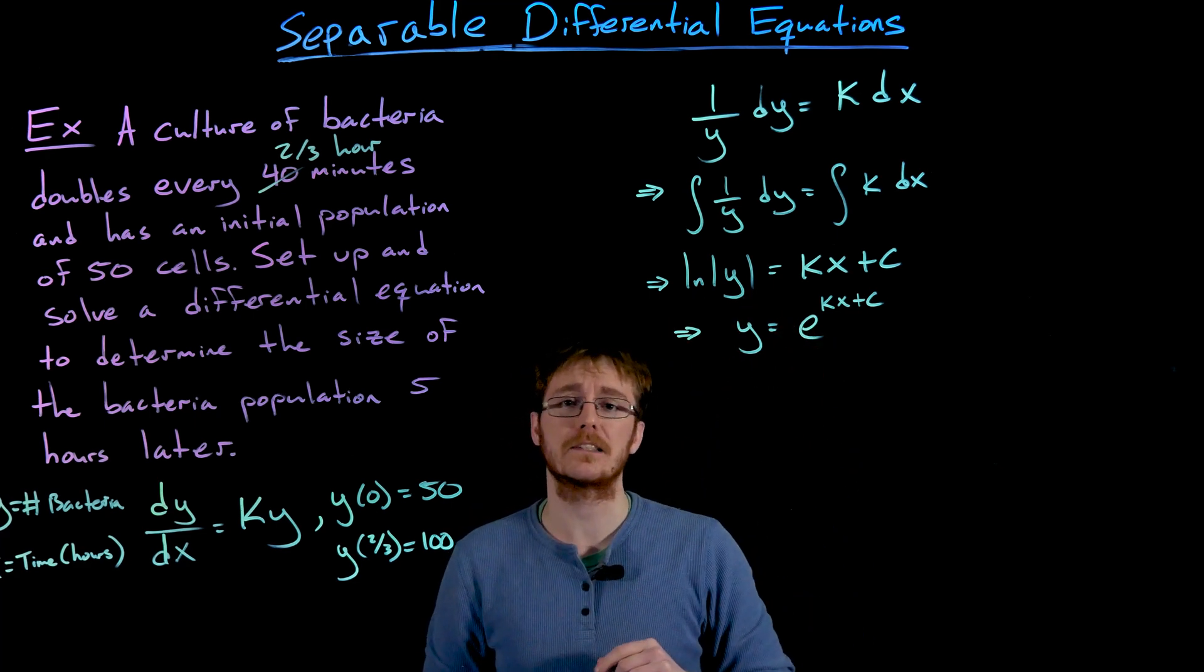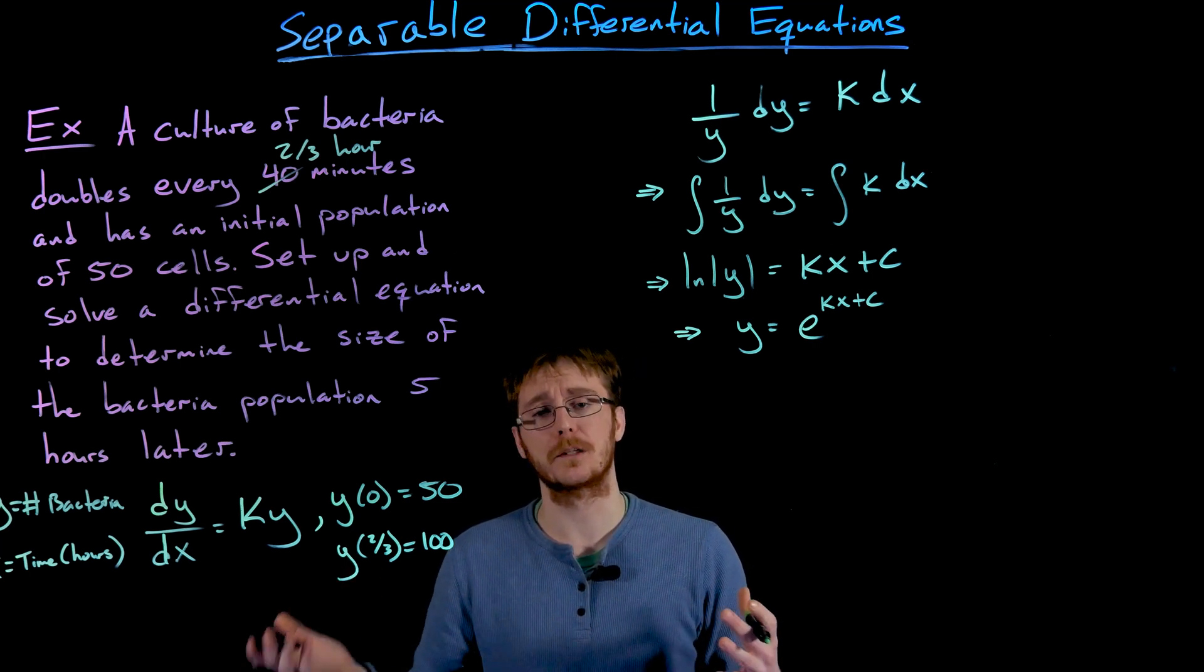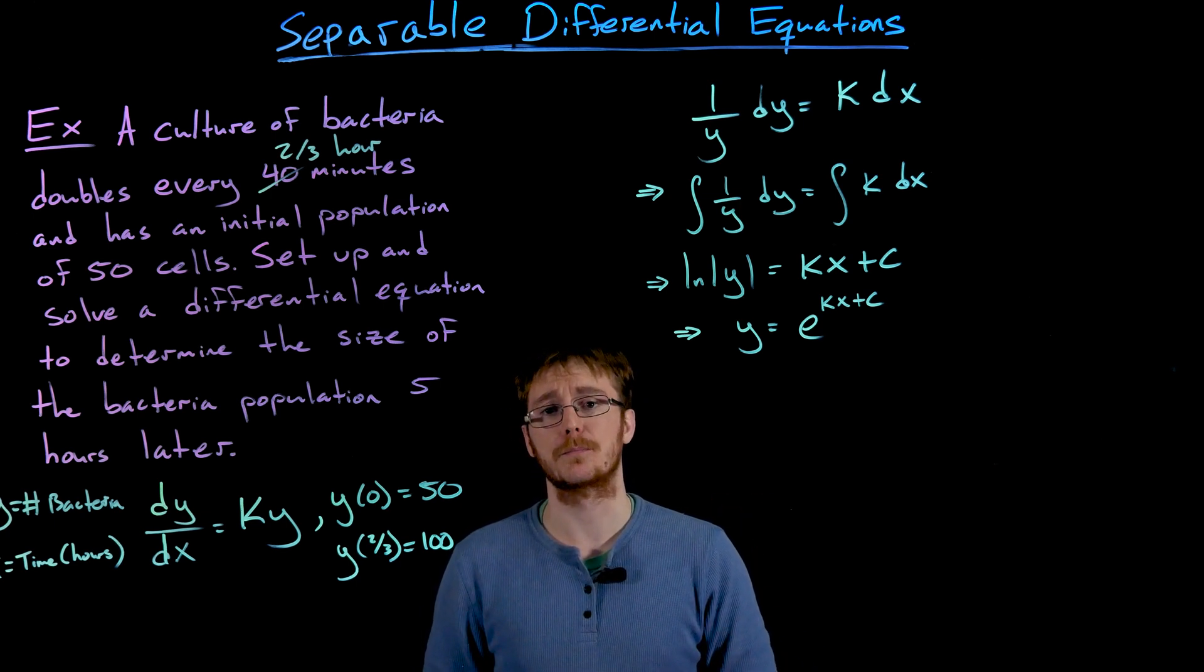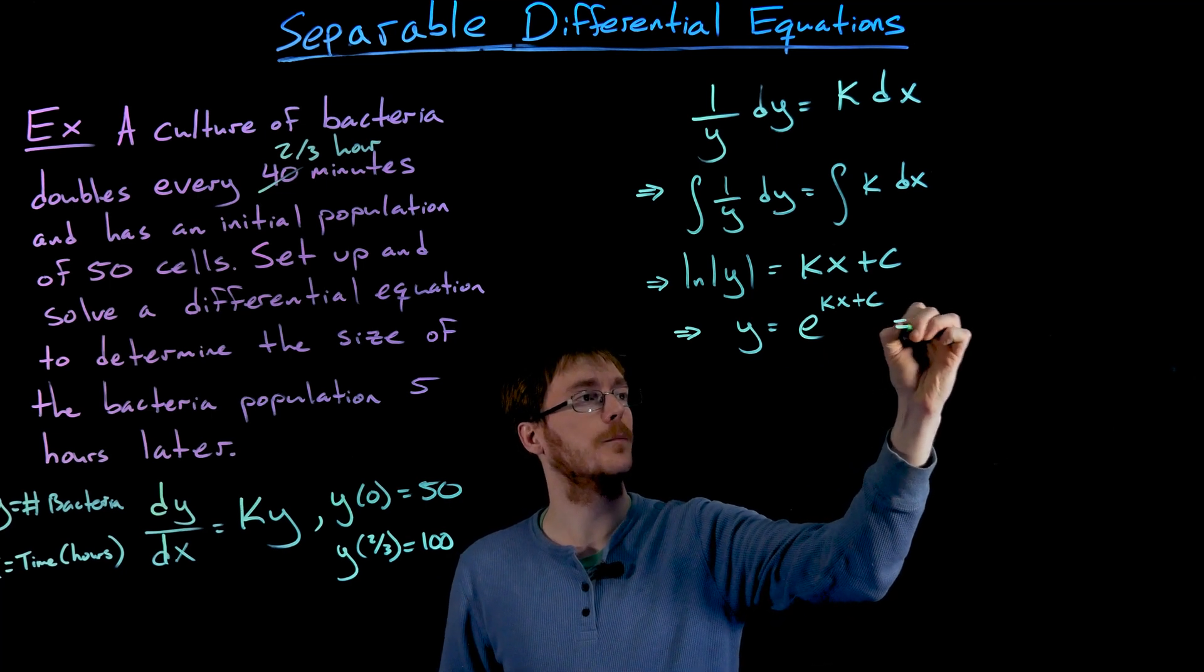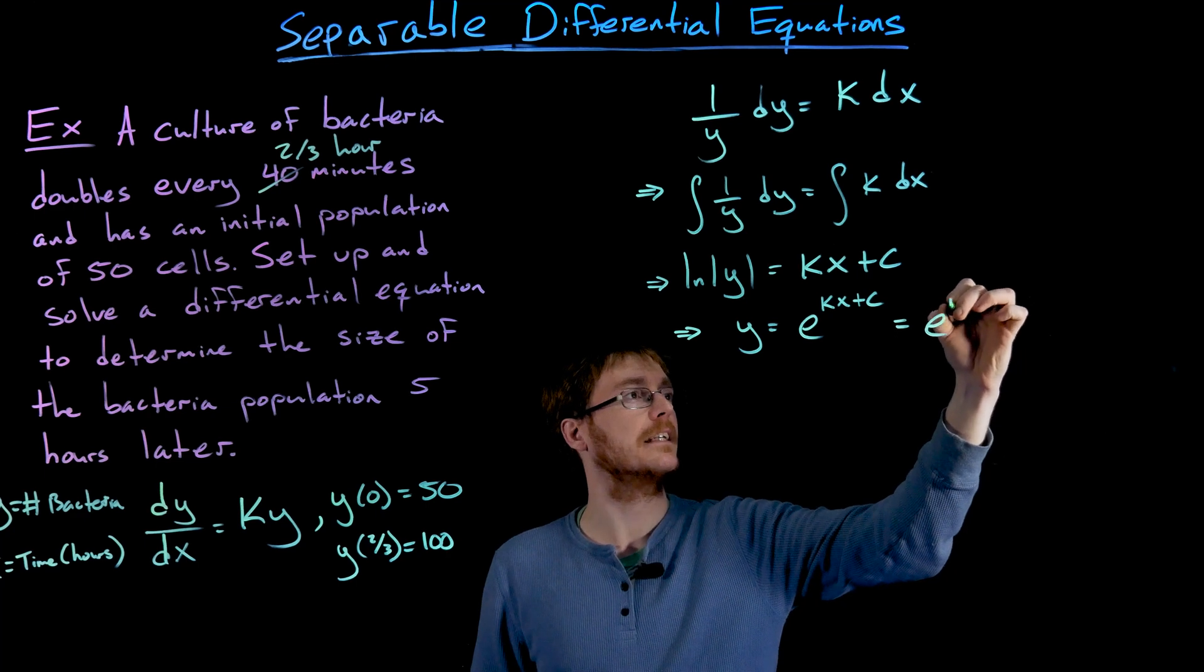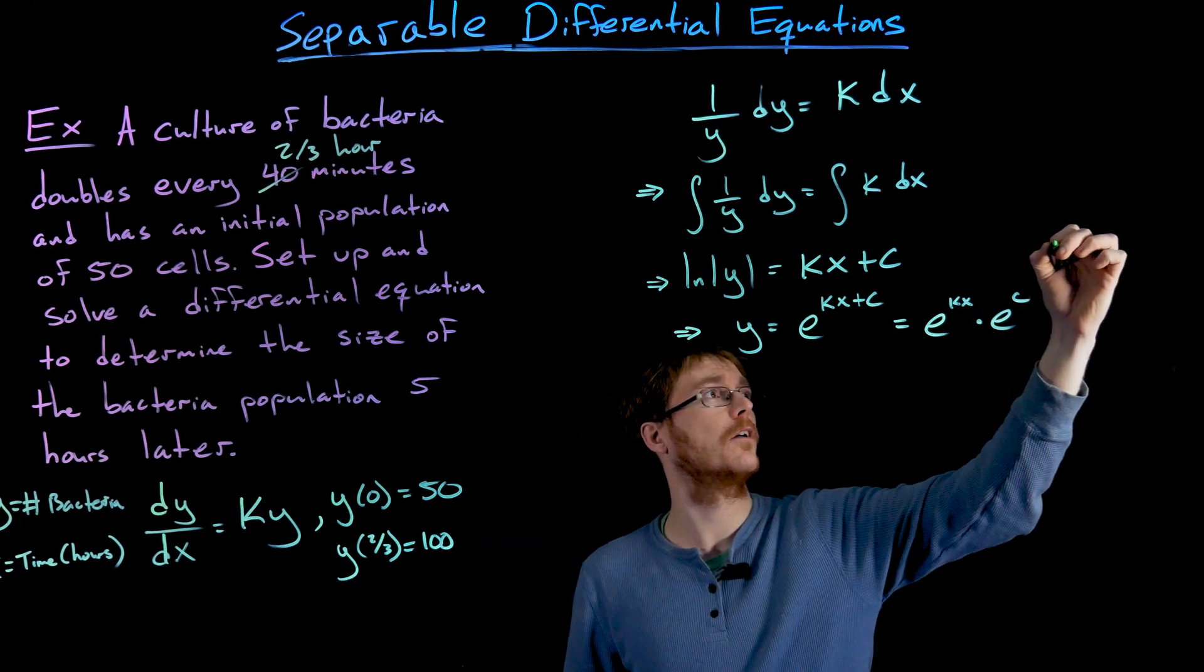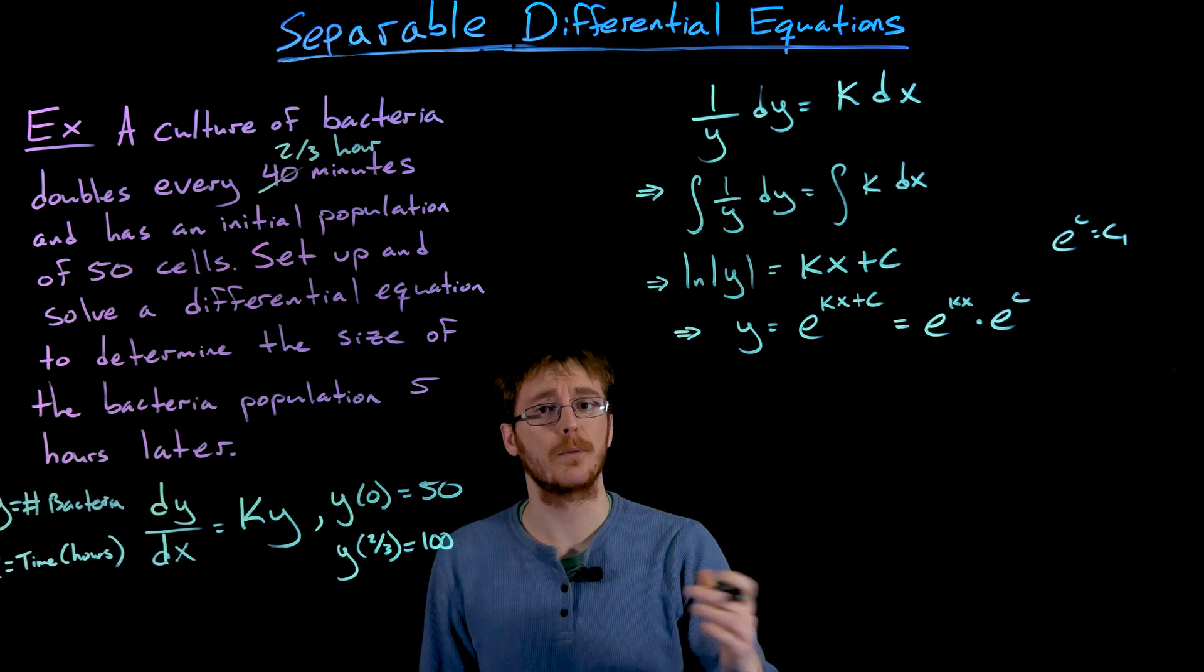but we know the population's always going to be positive here and y is describing the population of bacteria. So we want the positive solution to this problem. Furthermore, we could simplify this a little bit further by using some properties of exponents. Write this as e to the power of k times x times e to the power of c and then recognize that e to the power of c is also just going to be some constant, some positive constant. So let's relabel that as c1 to simplify our model.